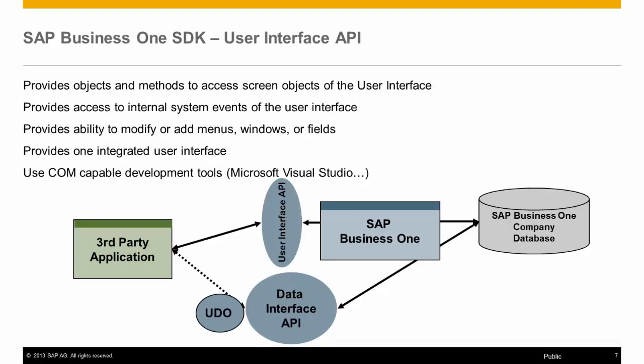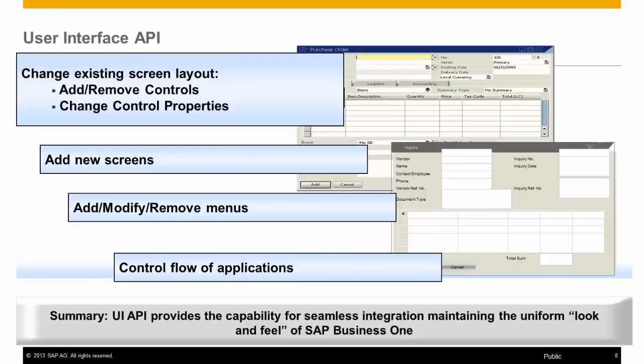The UI API, or User Interface API, is used to modify existing SAP Business One system forms or create new forms, as well as capture system events programmatically. It allows the ability to change existing system forms, add new forms, add, modify, and remove menu items, and control the flow of applications. Examples include adding new fields or buttons to system forms such as sales orders. We can also create our own forms that have the same look and feel as an SAP Business One form, allowing for a seamless user experience.